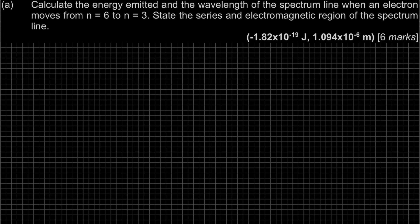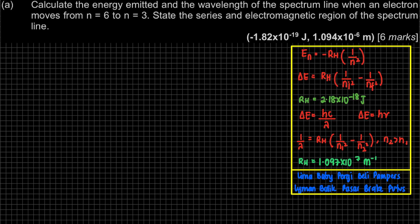This question involves the Bohr model, where there are some formulas you have to memorize. The energy at each energy level uses one formula, and delta E — the energy difference when the electron falls — uses another formula. For these two formulas, the Rydberg constant RH must be 2.18×10⁻¹⁸ joules.